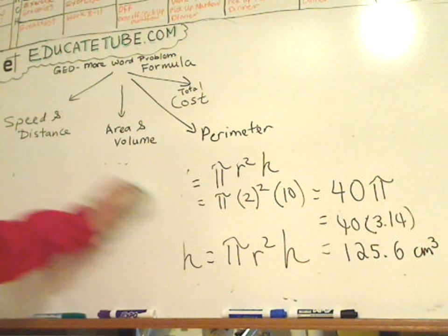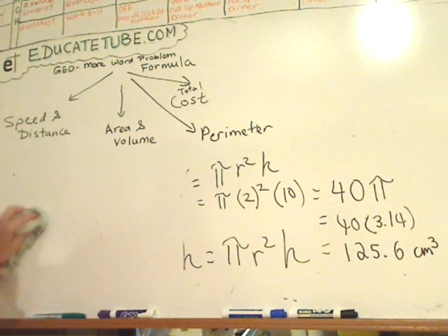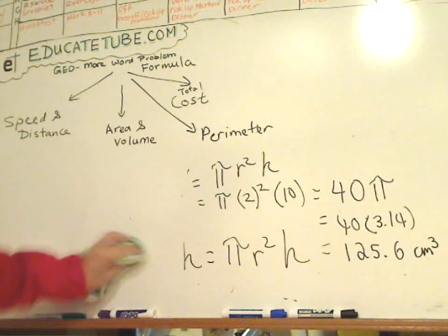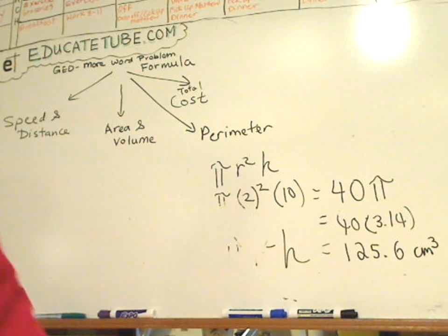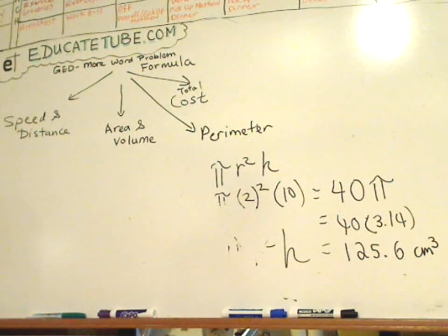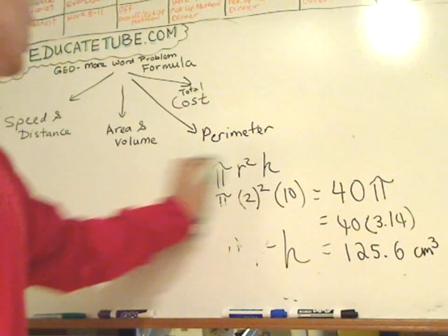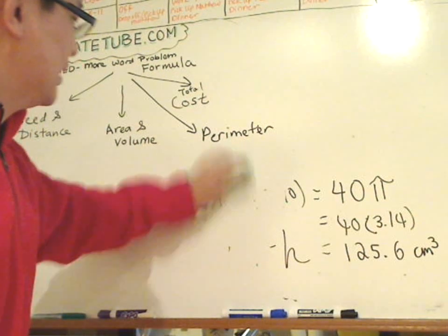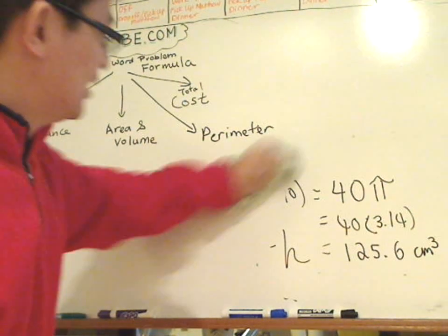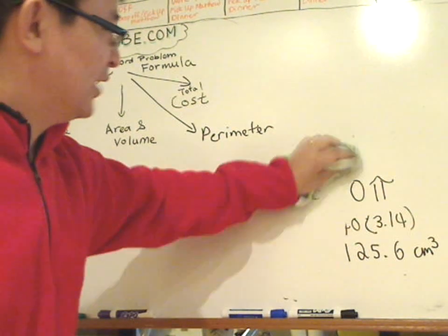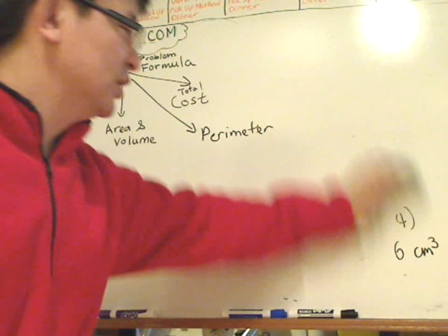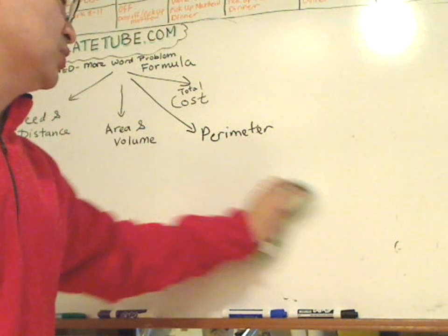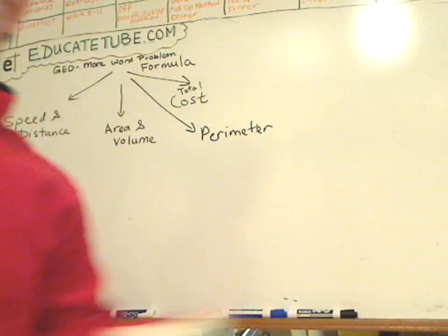Later on, I will talk more about the volume of the square pyramid and maybe the cone in the next advanced formula lessons. But for now, let's keep the volume discussion to these shapes.